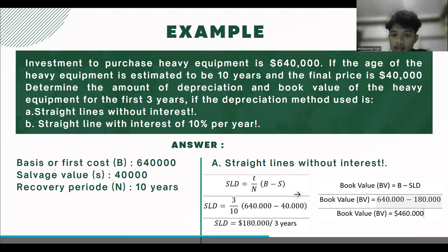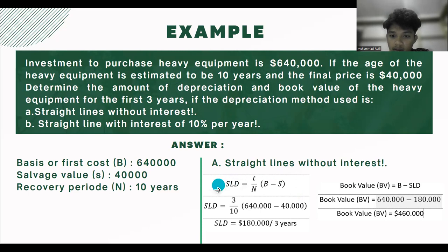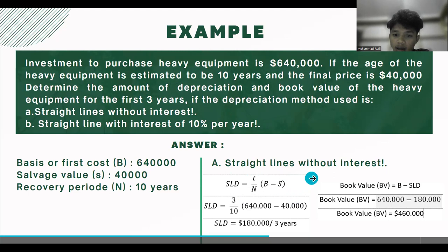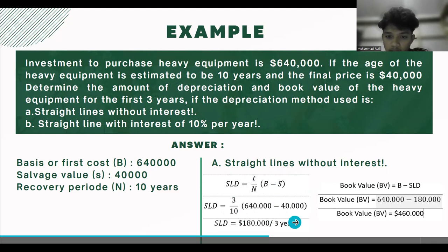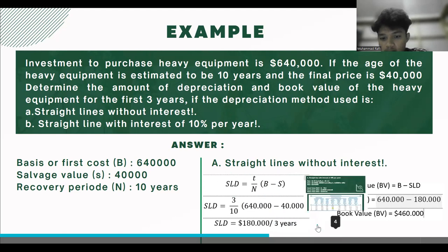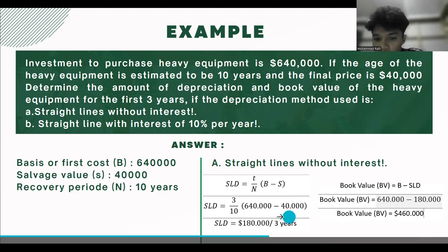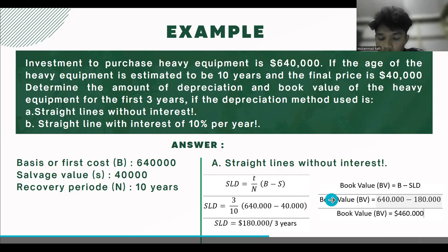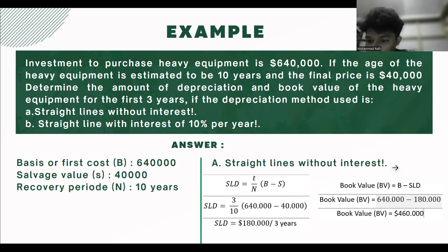To solve the problem, we calculate using the straight-line depreciation formula: SLD = (t/n) × (B − S). We input the values and get the result. The straight-line depreciation without interest for 3 years is $180,000. After we get the straight-line depreciation value, we calculate the book value with the formula B minus SLD, and we get the result of $460,000.